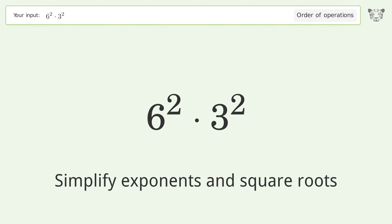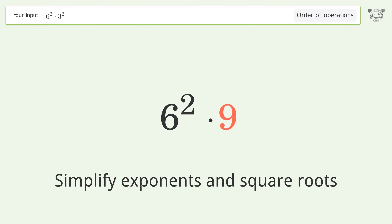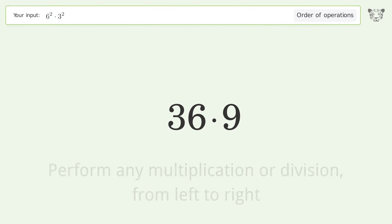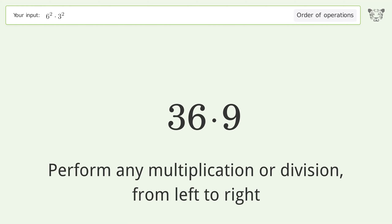Simplify exponents and square roots: 3 to the power of 2 equals 9. 6 to the power of 2 equals 36. Then perform any multiplication or division from left to right.